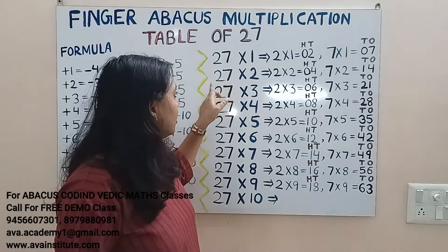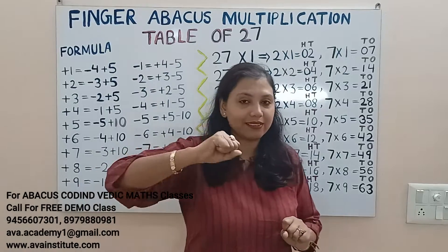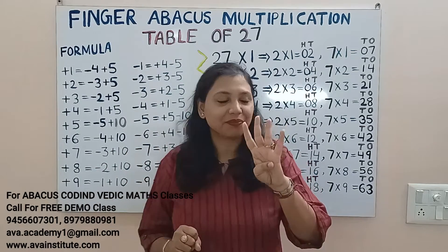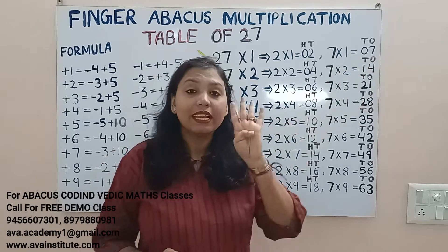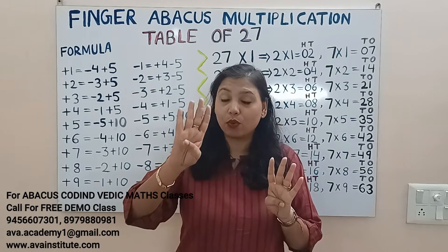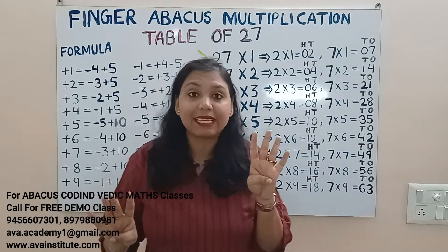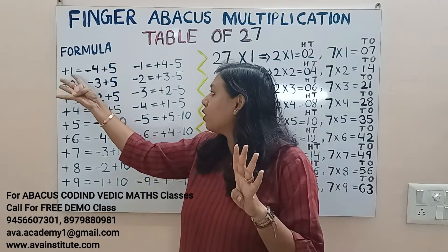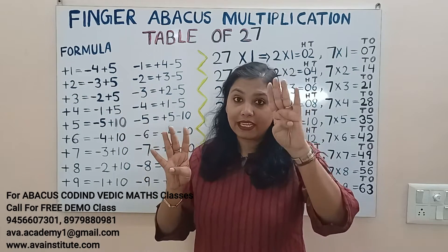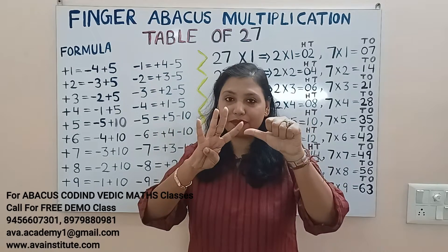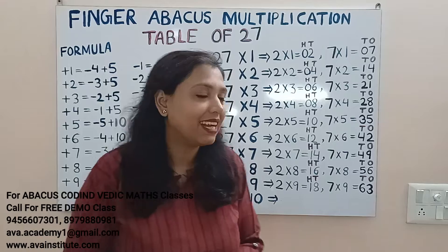27 twos: 2 twos are 4 — in hundreds 0, in tens 4. 7 twos are 14 — in tens 1, in ones 4. To add 10 in tens: plus 1 formula is minus 4 plus 5, so plus 10 formula is minus 40 plus 50. The answer is 54.